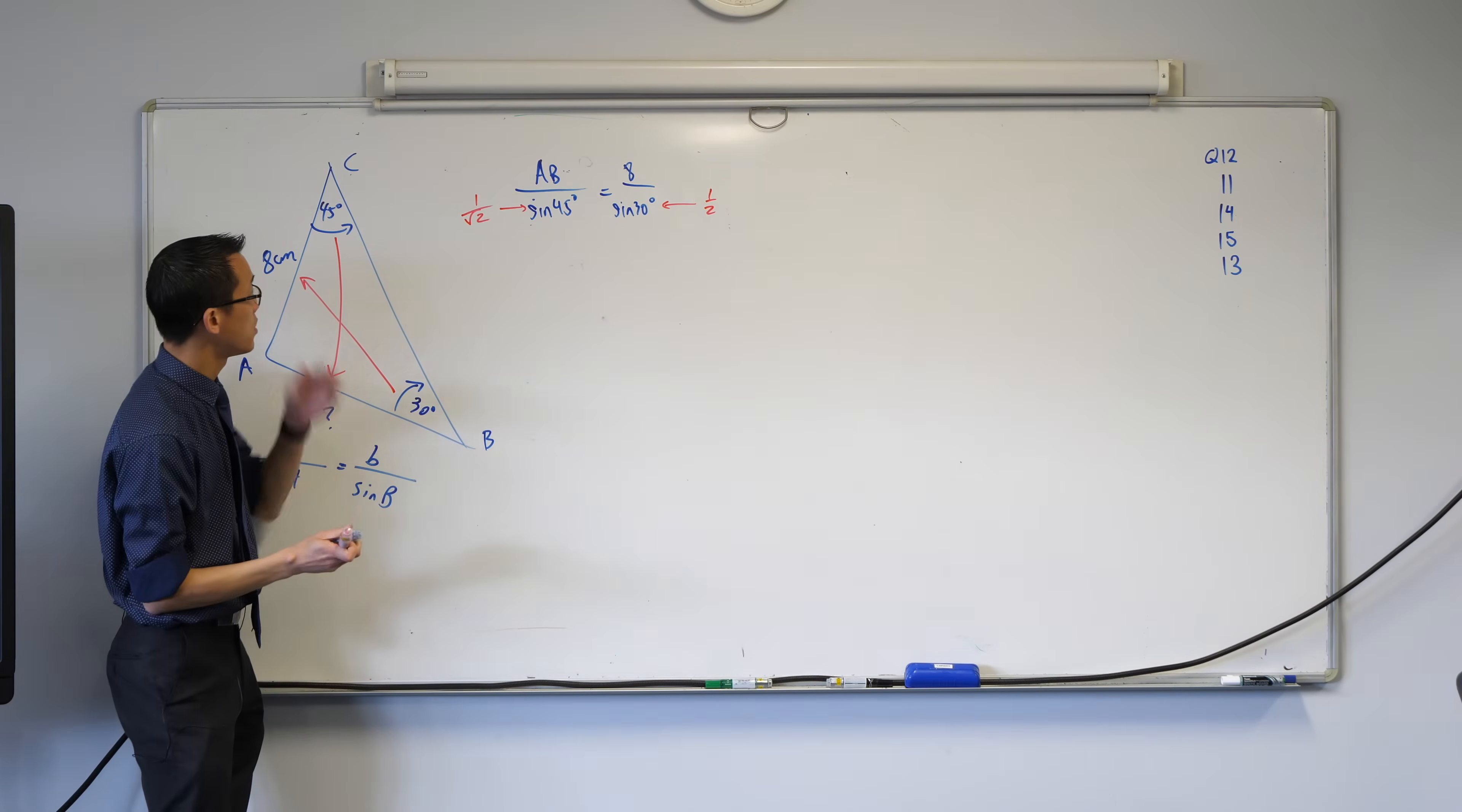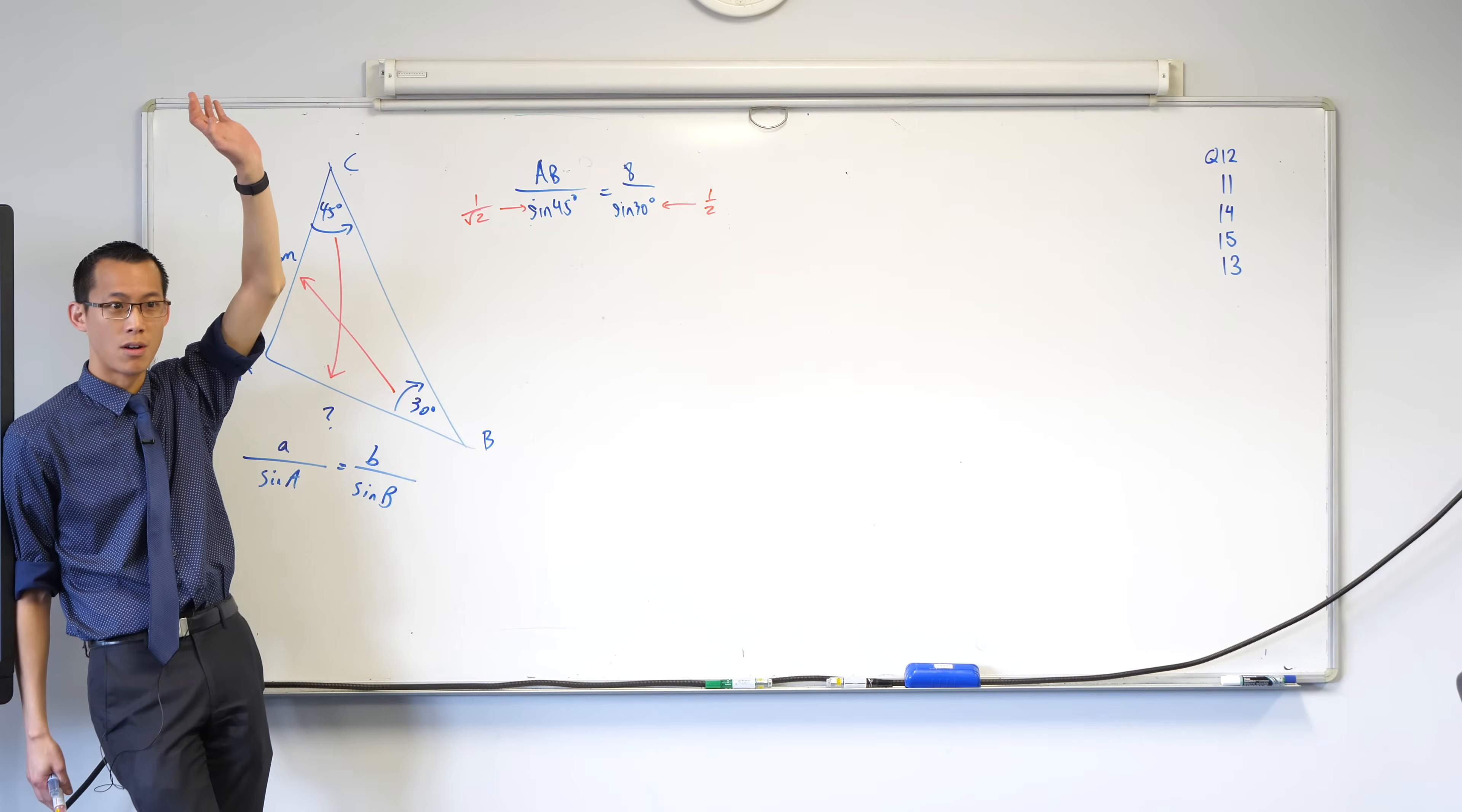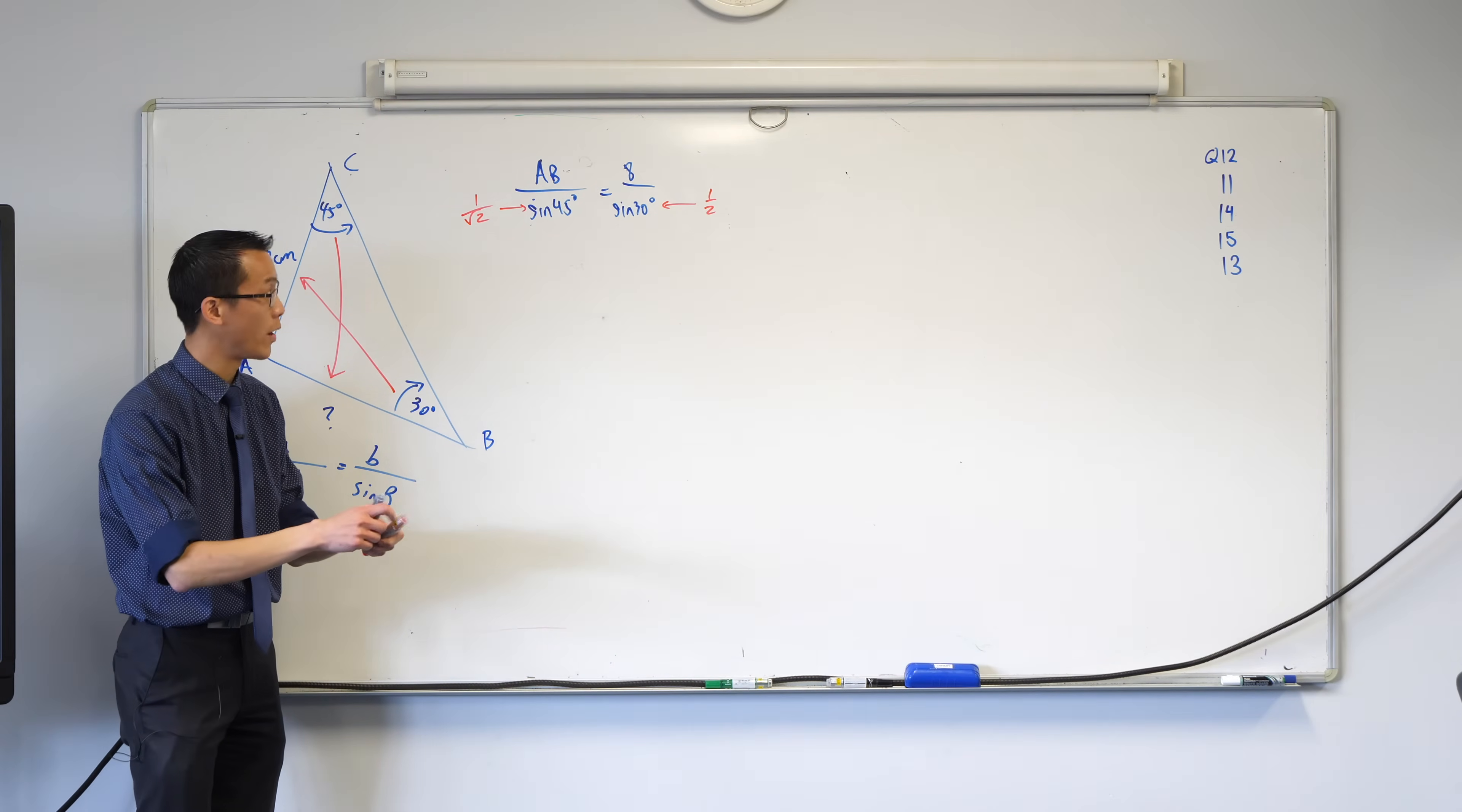Once you've got these numbers in place, you can just rearrange. We should end up at 8 root 2. Did you get that? Give me a nod, give me something. Who got 8 root 2? Really? I picked this one because it was the easy one. Is that John's? Way to go, John. It sounds like you need a bit of help getting to that point. Let's go further.